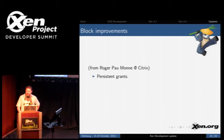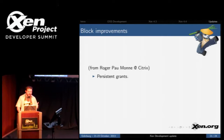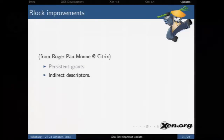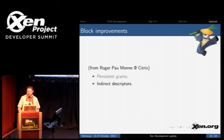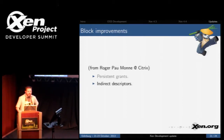Block improvements: persistent grants are a performance improvement that allows keeping pages mapped rather than repeatedly mapping and unmapping them. Indirect descriptors allow you to have more segments inside each request — similar to a scatter-gather concept where you have a pointer to other things — allowing more data in a single request, again a performance improvement that allows a deeper pipeline.